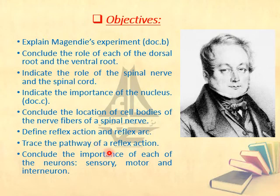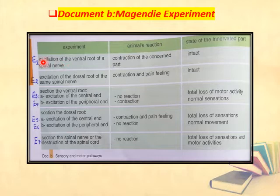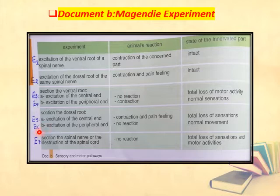This document concerns Magendie's experiment. Open your books and label each experiment: E1, E2 part A, E3 part 4, E4, E5, E6, and finally E7. 'E' refers to excitation, which means stimulation — where we apply a stimulus.